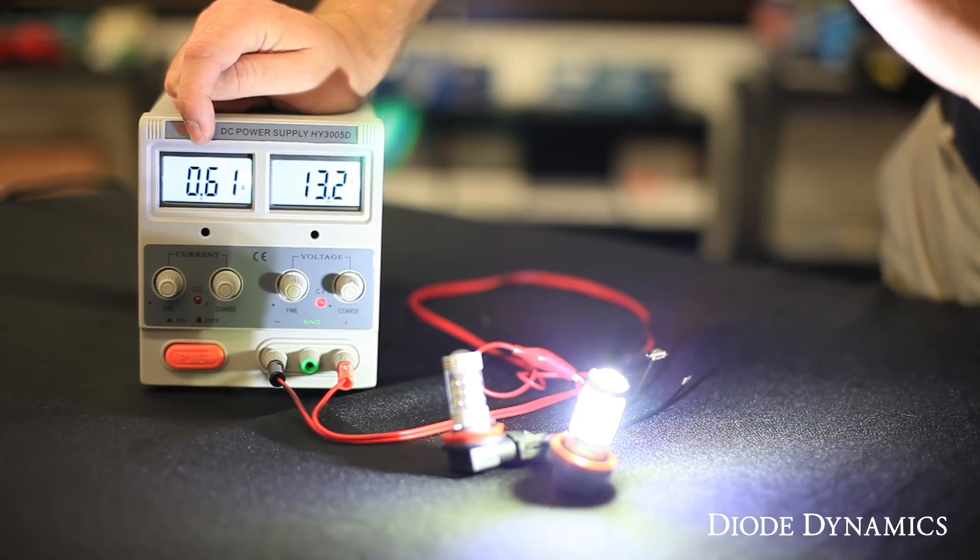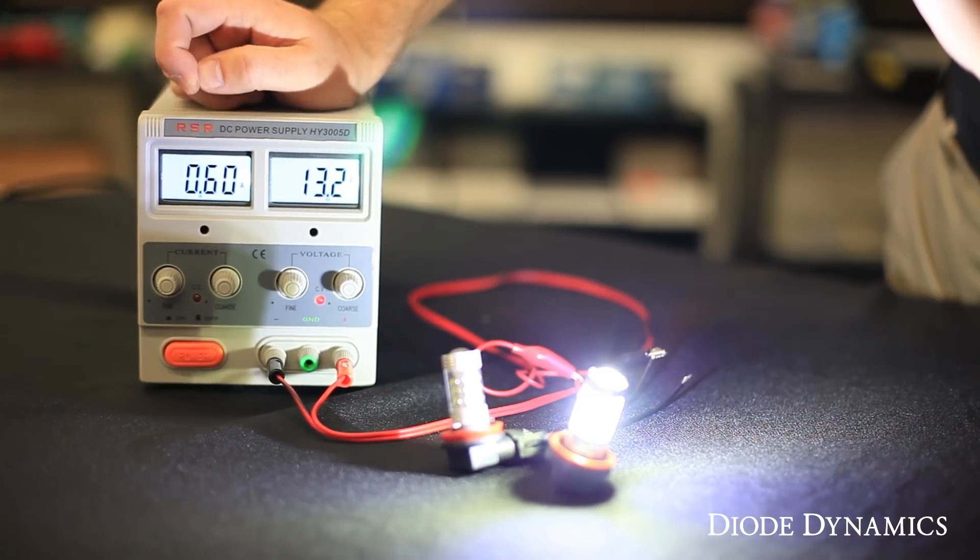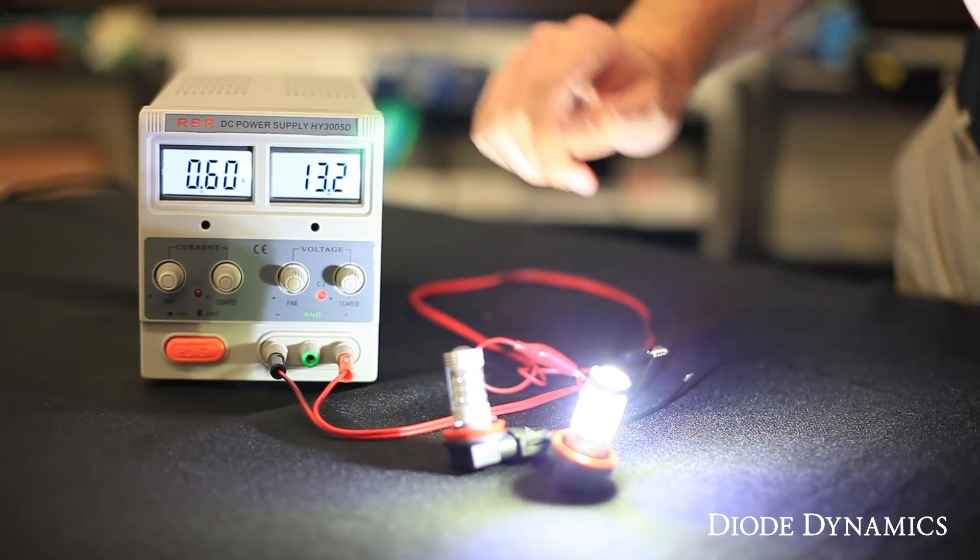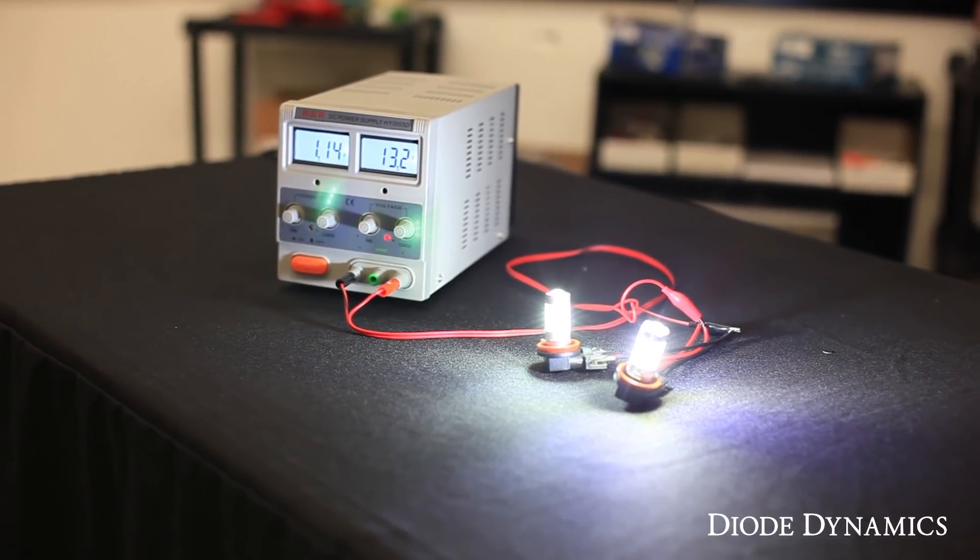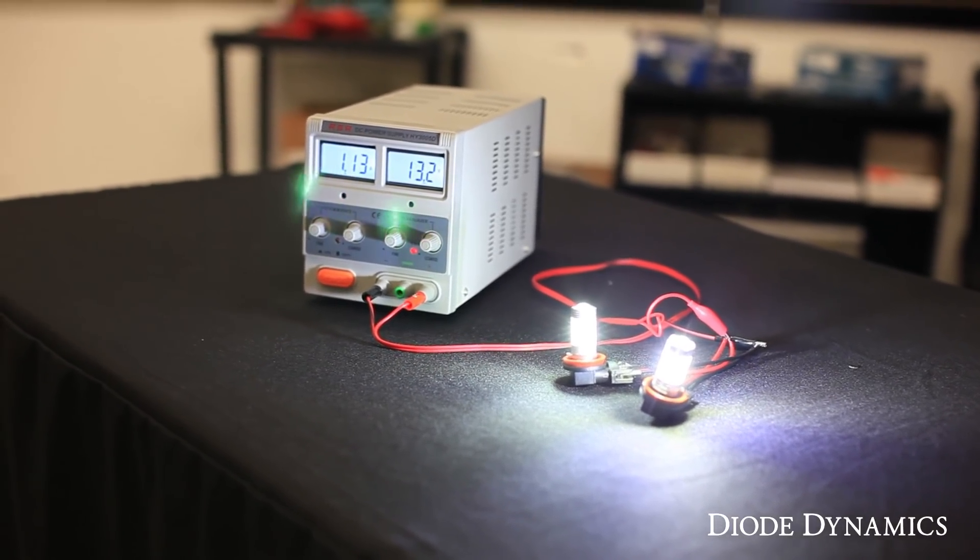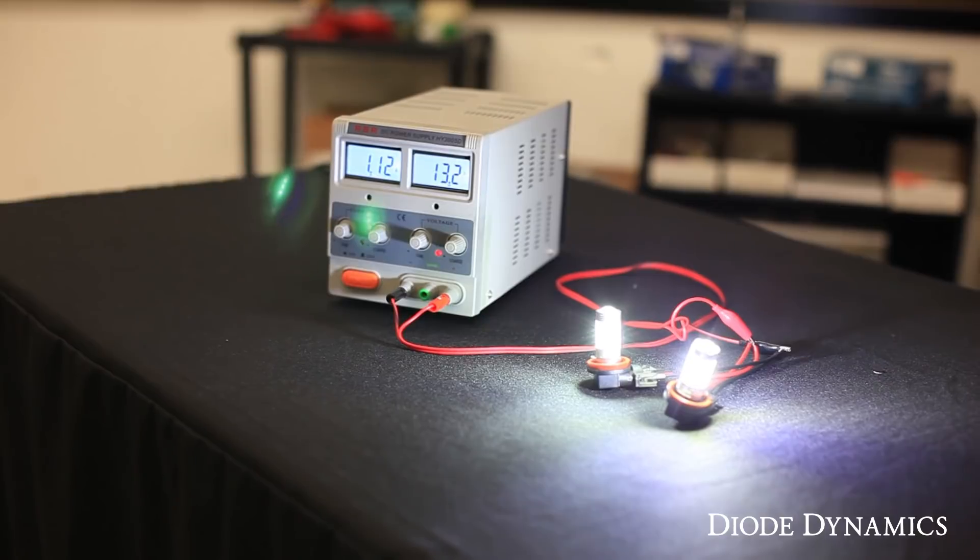This is just one of the many electrical differences when you purchase Diode Dynamics products versus the competition. Don't pay attention too much to what the bulb looks like when it's off. It's more about what it looks like when it's on. You can read more about this at our research page at DiodeDynamics.com. Thanks for watching.